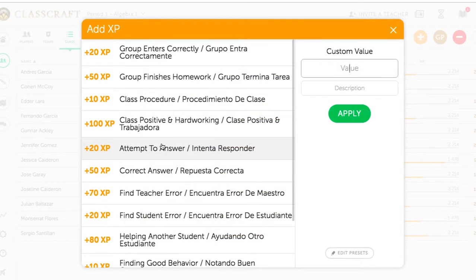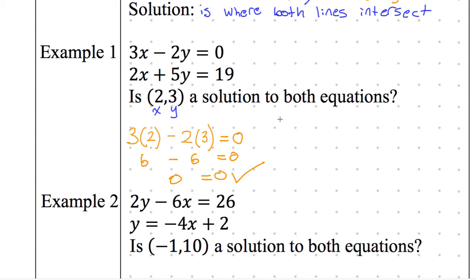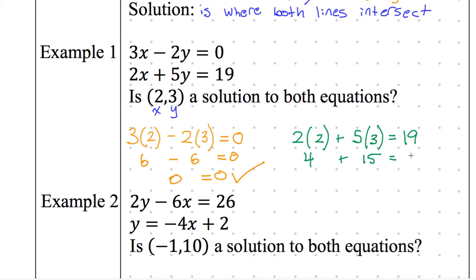Now the second equation: substituting x=2 and y=3 gives 2 times 2 minus 5 times 3 equals zero — wait, that's 4 plus 15 equals 19, and 19 equals 19. Check mark. If both equations have check marks, the point satisfies both, so the answer is yes — (2, 3) is a solution, which is where those two lines intersect.